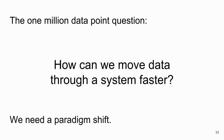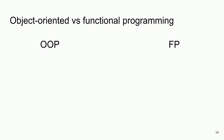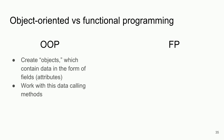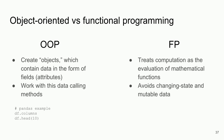We need a paradigm shift — specifically, we need to think about object-oriented programming versus functional programming. Object-oriented programming is what we're most used to in Python: we create objects which contain data in the form of fields and attributes, and we work with that data using methods. An example from pandas: df.columns is an attribute; df.head is a method.